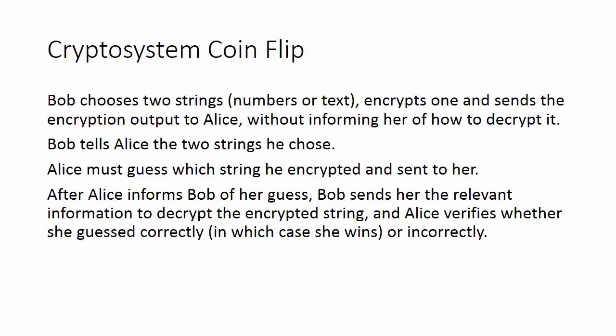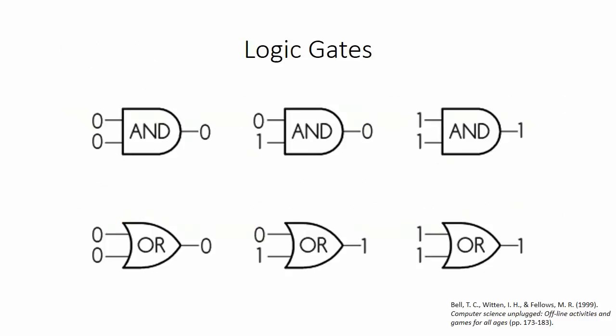Bob tells Alice the two strings he chose. Alice must then guess which string he encrypted and sent to her. After Alice informs Bob of her guess, Bob sends her the relevant information to decrypt the encrypted string, and Alice verifies whether she guessed correctly, in which case she wins, or incorrectly.